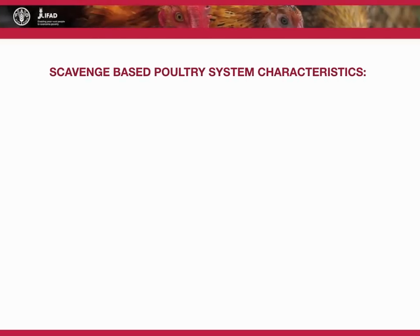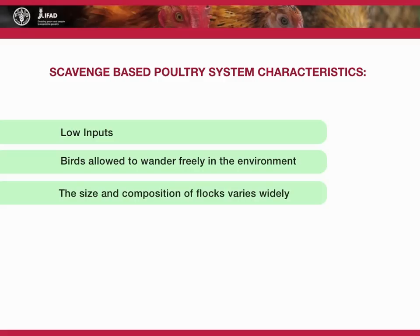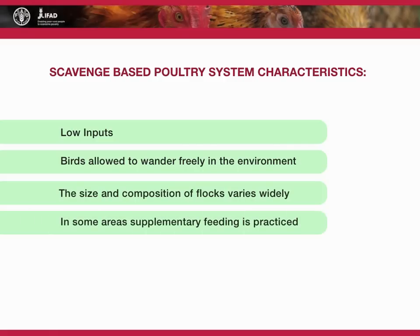Scavenge-based poultry systems are characterized by low inputs. Birds are allowed to wander freely in the environment and scavenge for all or most of their food. The size and composition of flocks varies widely. In some areas, supplementary feeding is practiced.